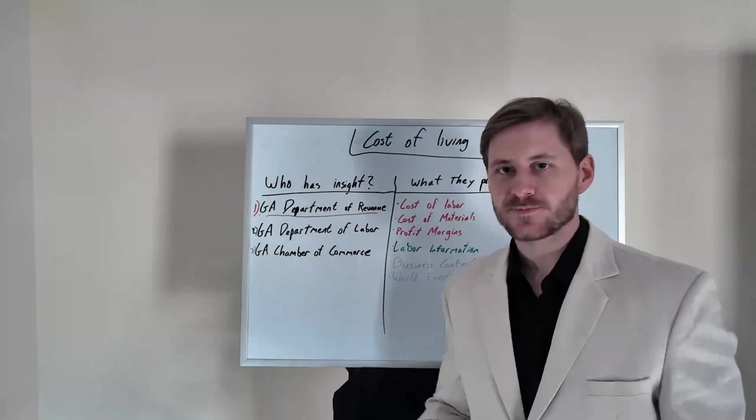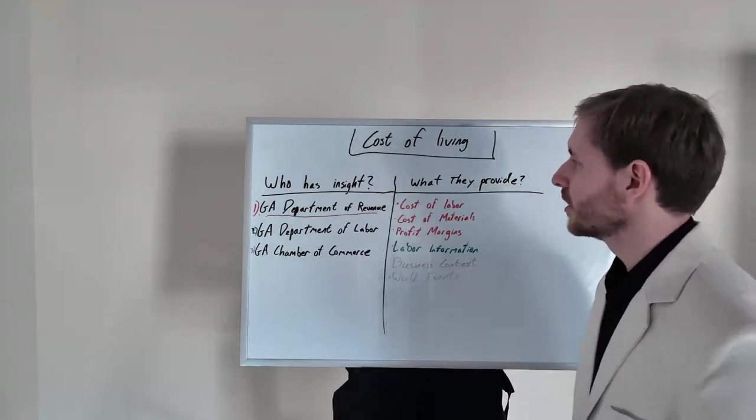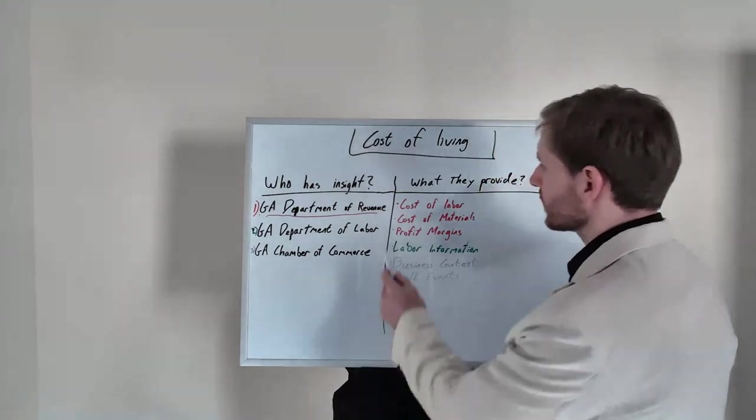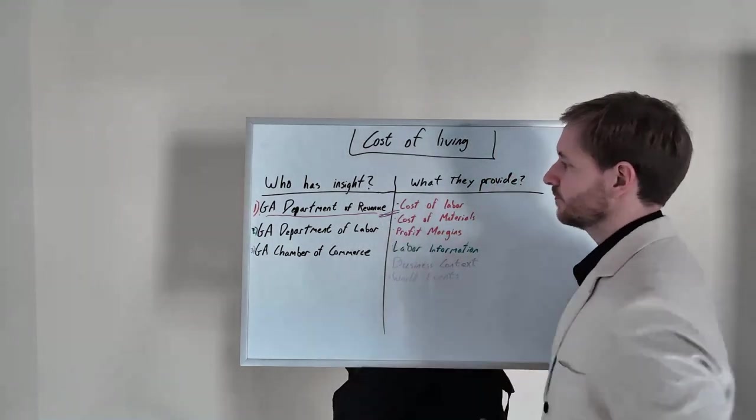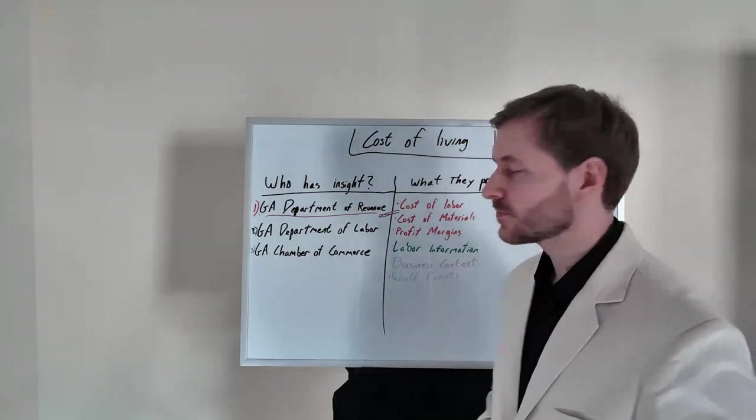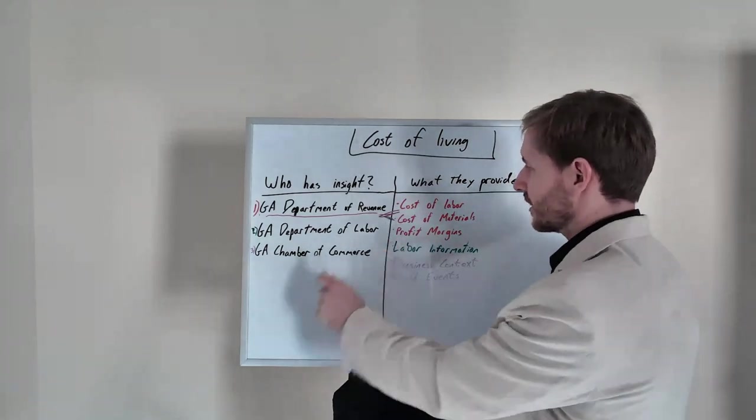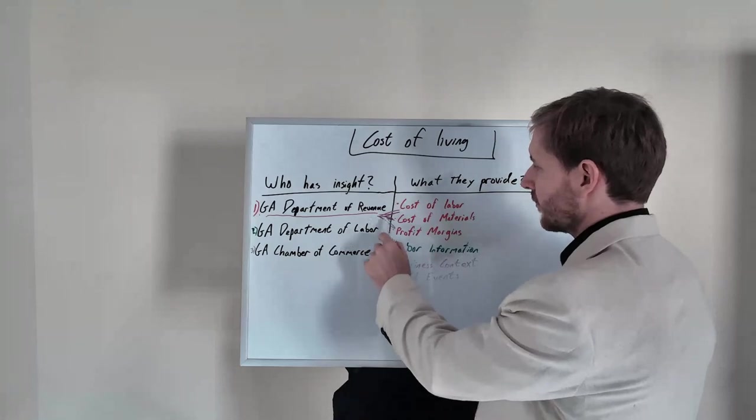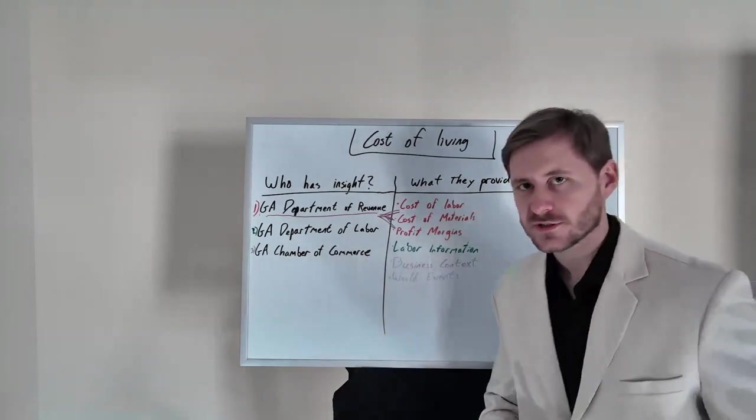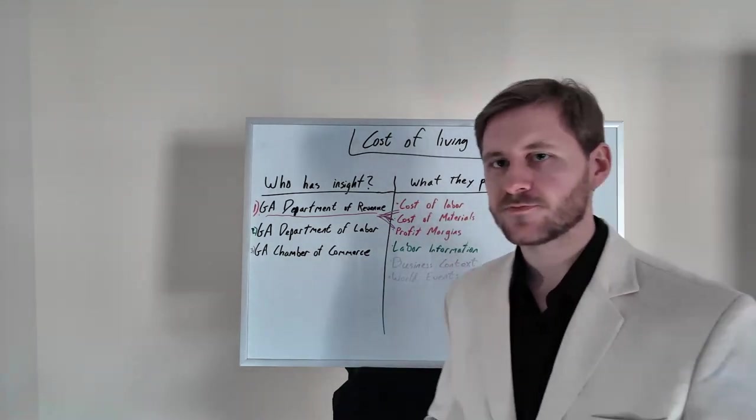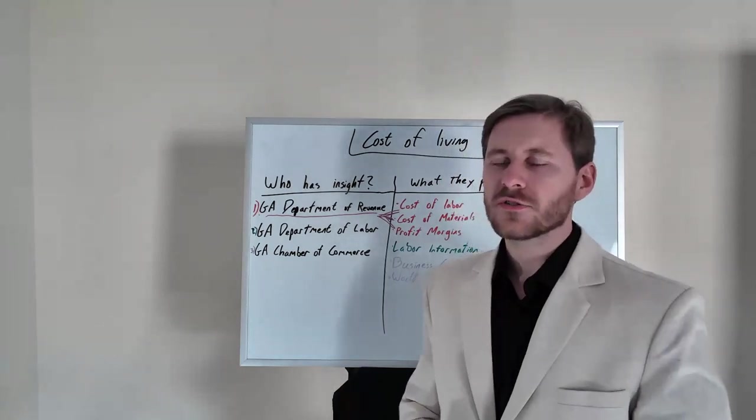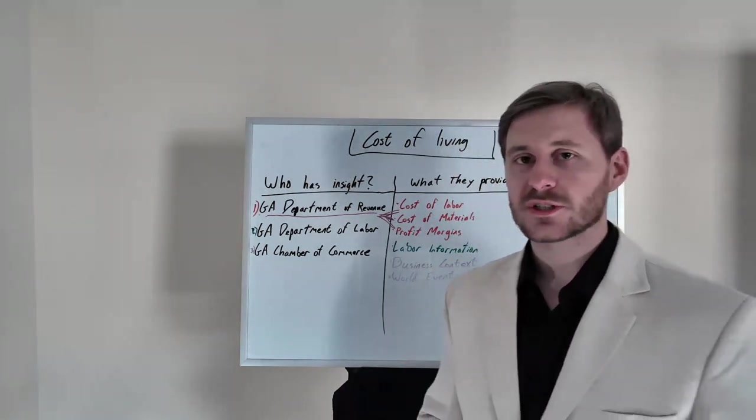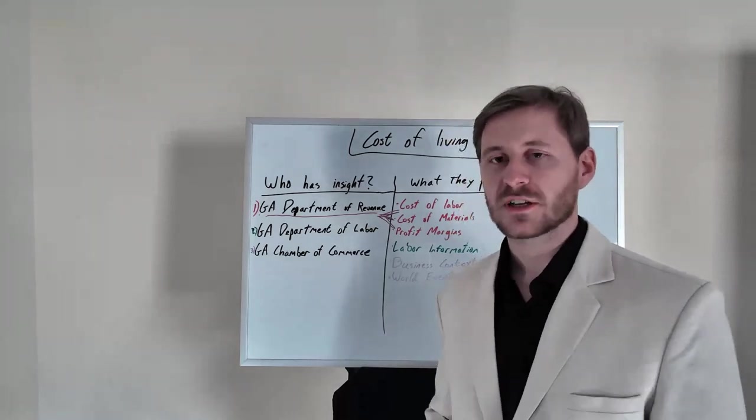What can they do? Well, they have access to all your taxes. Anyone who files a tax return in the state of Georgia, this would be even more effective if it was the IRS. They know the cost of labor for those businesses. They know the cost of materials for those businesses. They know the profit margins for those businesses. They know executive compensation. They know all of that information.